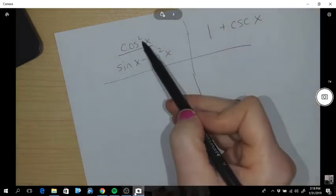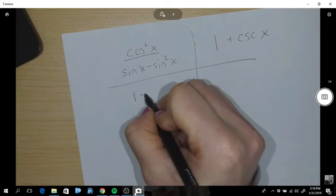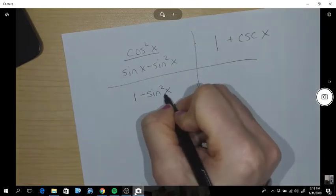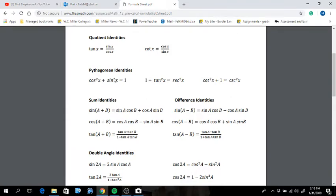So, cos squared x. I'm going to make a replacement. It is the same as 1 minus sin squared x. Okay, and where did I get that from? Right here on your formula sheet. Sin squared plus cos squared is 1.